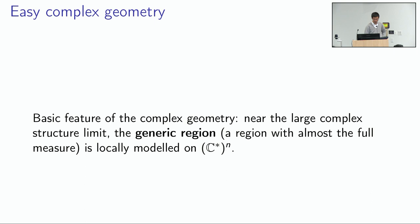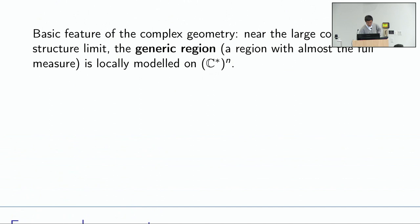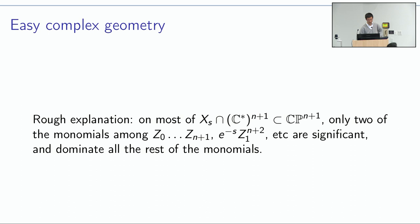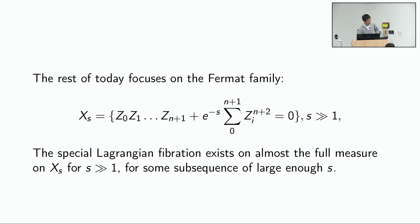Let me tell you the easy parts, which is the complex geometric part. Near the large complex structure limit, complex geometrically the generic region — most of the measure — is locally modeled on (C*)^n. C* has a circle direction, and (C*)^n has n circle directions, which is where the torus comes from. Working on the Fermat family, which is a hypersurface: this polynomial involves lots of monomial terms like z_i^{n+2}, but in a generic region only two monomials dominate all the rest. You can't just have one monomial because the sum is zero, so you have at least two, and all others can be ignored up to exponentially small errors.